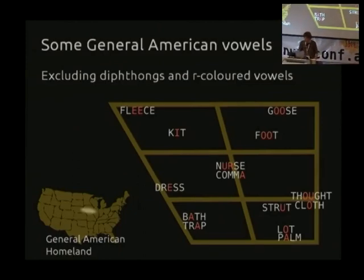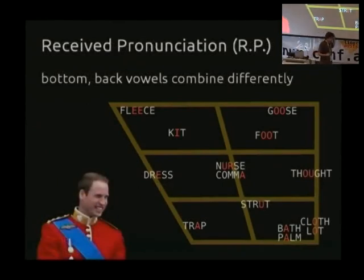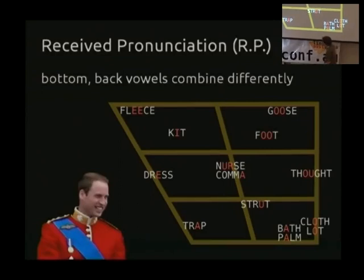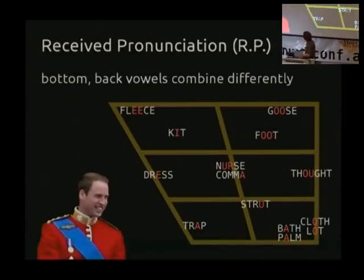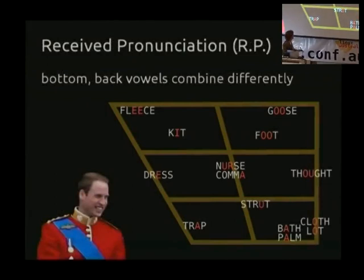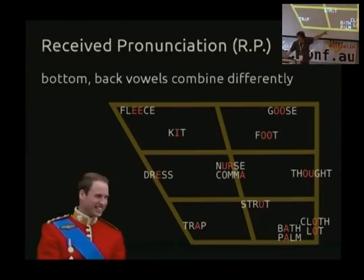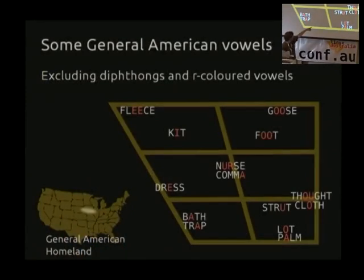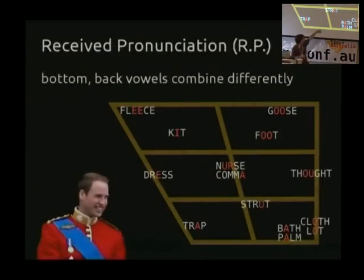This is a posh British accent. I had Tim Berners-Lee there this morning, but he doesn't speak RP - received pronunciation - so after watching him this morning I changed it to Prince William. The Americans join 'bath' and 'trap' together, but in the UK, 'bath' jumps across to join with 'palm'. If you look at 'thought' and 'cloth', 'cloth' and 'lot' are the same vowel to us but not to Americans. This is getting to why you can't just use an American model.